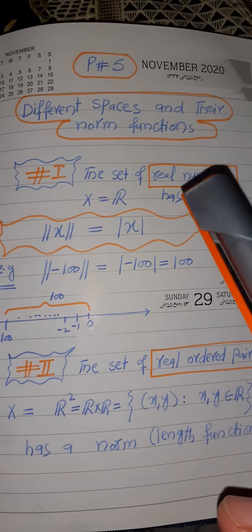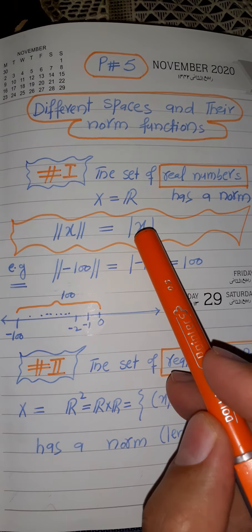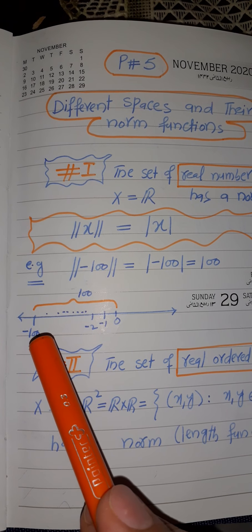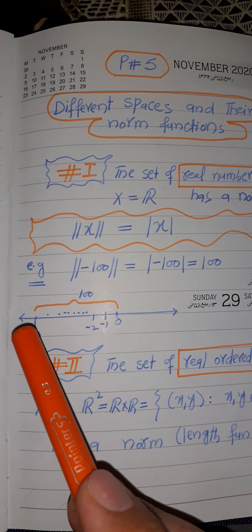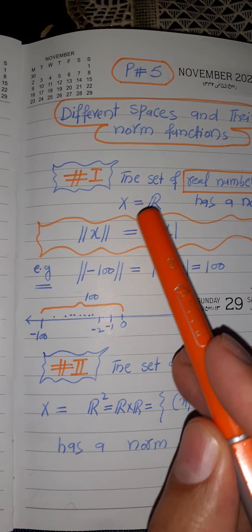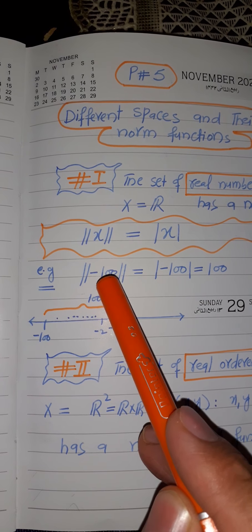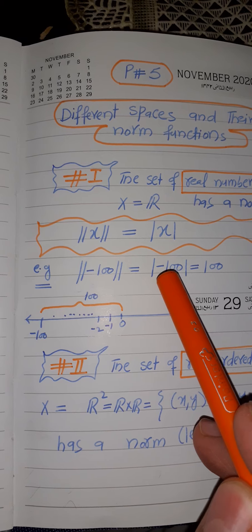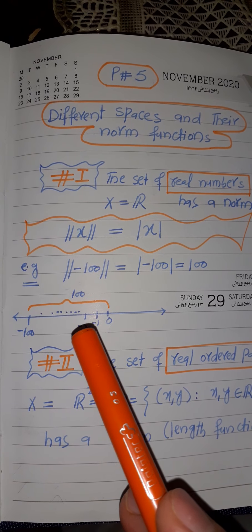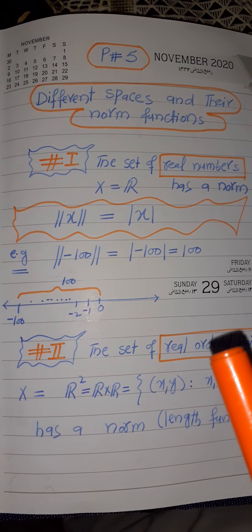We recall from that lecture that for the set of real numbers, the length function is actually the absolute function. If we consider real numbers as vectors and want to calculate the magnitude of a real number, we put it into the norm function. For example, the norm of minus 100 is the absolute value of minus 100, which equals 100. So for real numbers, the absolute function is the norm function.